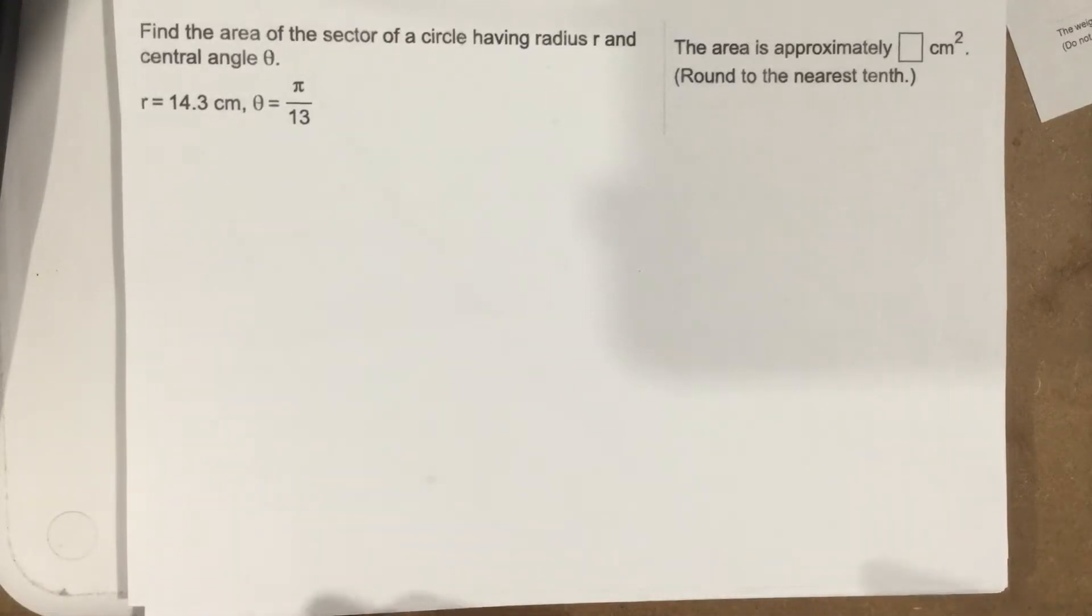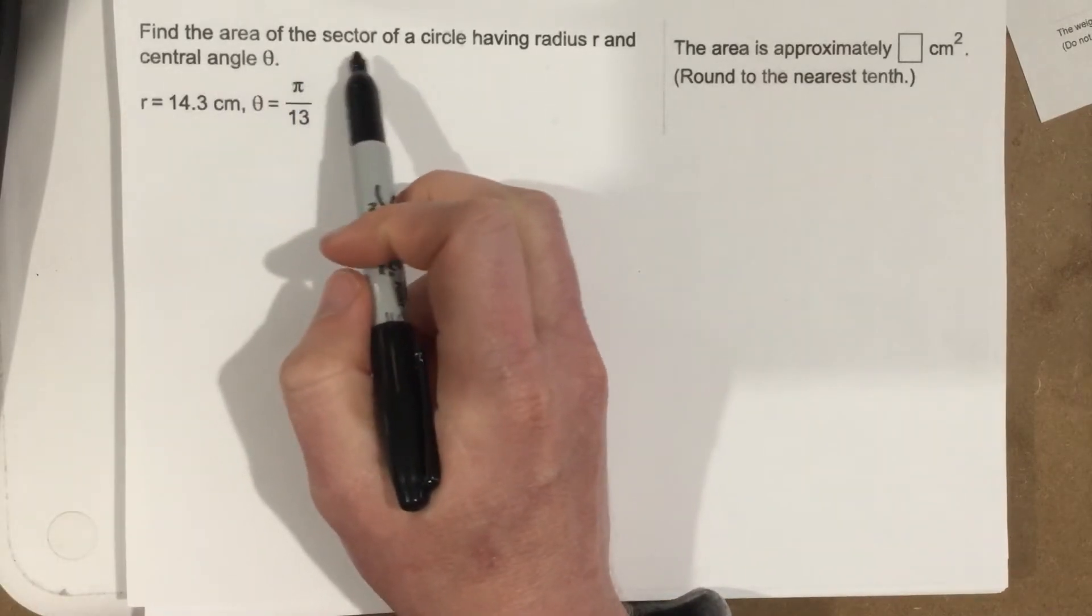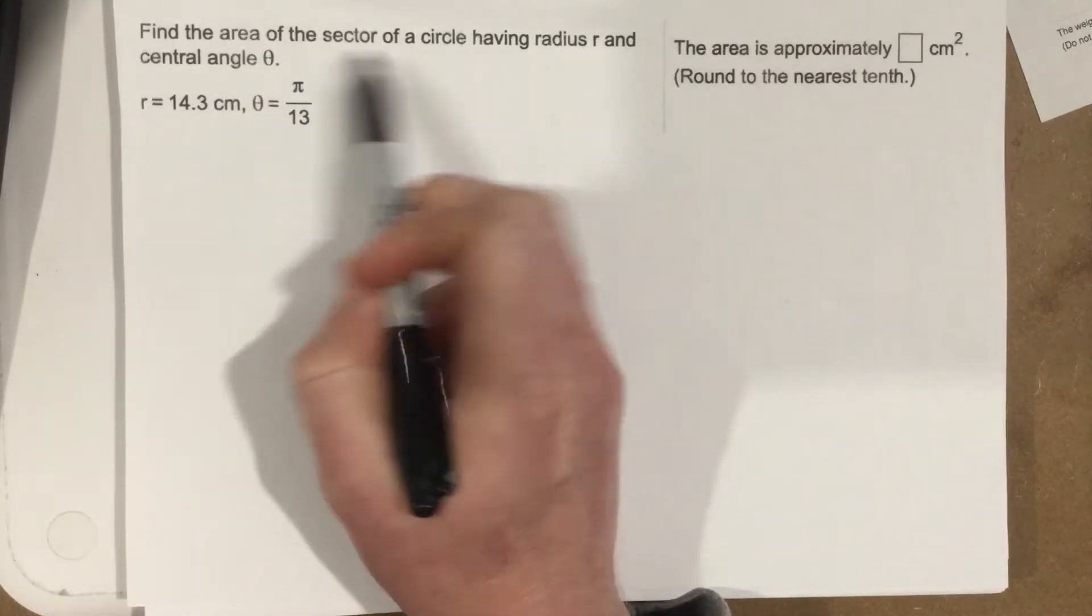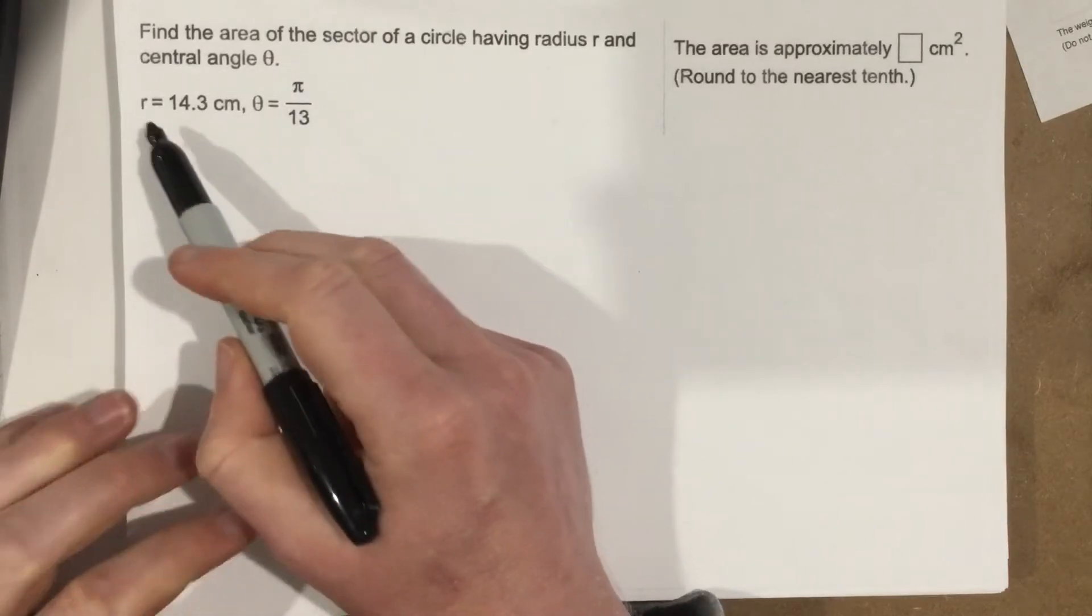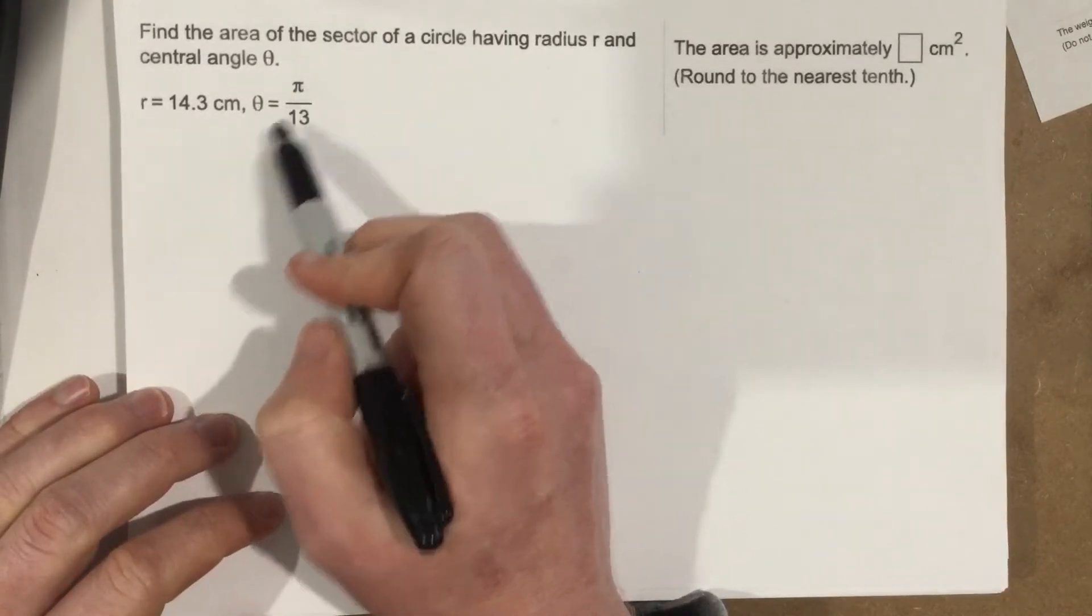All right, this is problem number four from the homework, section 6.1. Find the area of the sector of a circle having radius r and central angle theta. They give you r as 14.3 cm and theta is pi over 13.